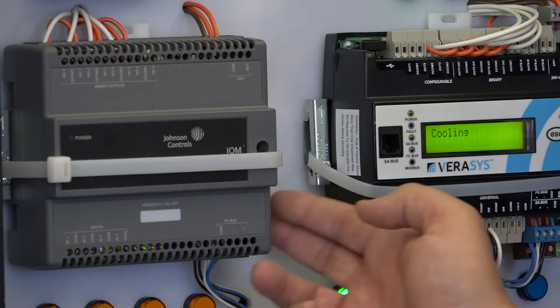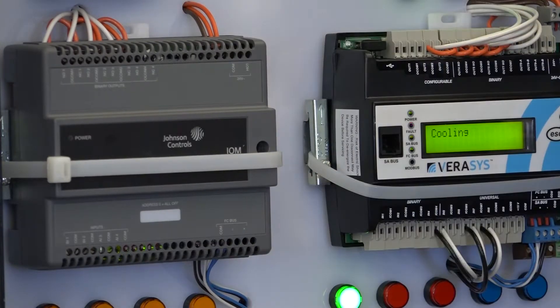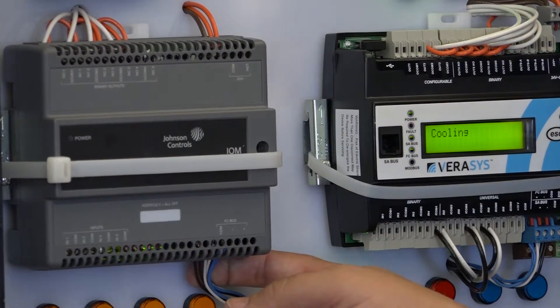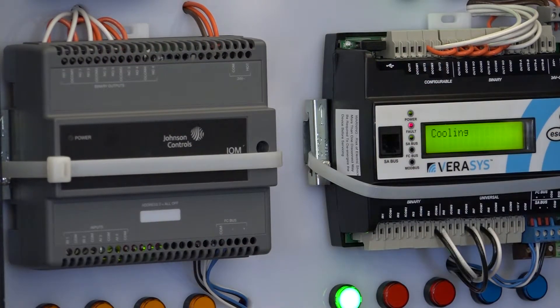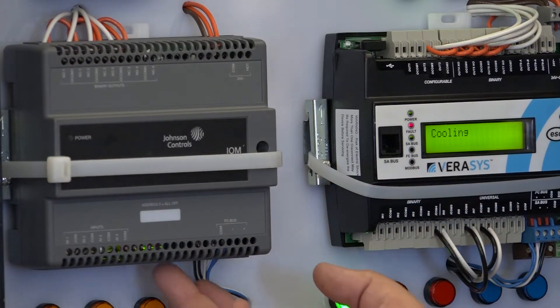The IOM100 is a pretty simplistic controller working with those interlocks. It has a field controller bus and wires directly on the system bus. It does not wire on a zone bus. That's how the connection is made.